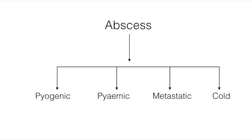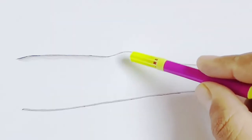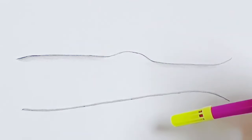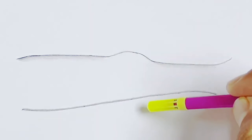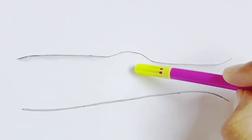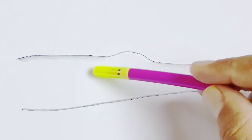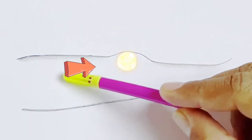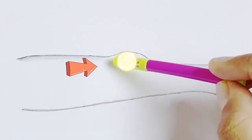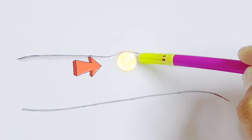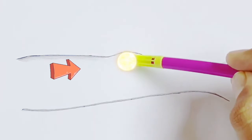Pyogenic abscess means whenever there is an infection to an area, there will be a localized collection of pus — that is called a pyogenic abscess. Pyemic abscess means the infection is in the bloodstream somewhere in the body.